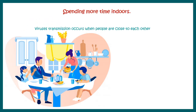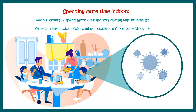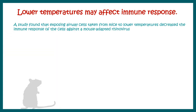In general, sunlight is really crucial for making the active form of vitamin D, which has an immune modulatory role. Moreover, in winter season we generally spend time with our families indoors, and that enhances the chance of viral transmission. If one member of the family is infected with the virus, it is more likely that other members would also get infected.